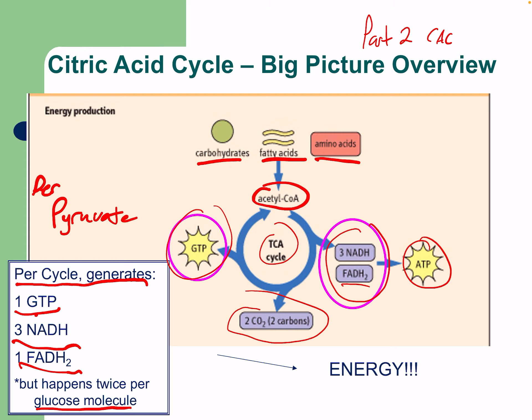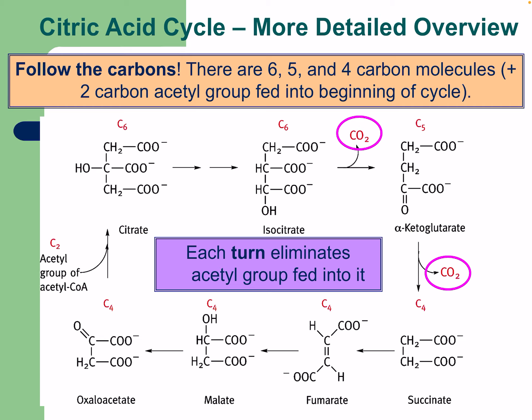This is all done to get energy. For a more detailed overview — we ended at step three in the last lecture, so check that out for a refresher on steps one to three. When going through the cycle, it's important to follow the carbon. There are six-, five-, and four-carbon molecules, plus the two-carbon acetyl group fed into the beginning of the cycle.